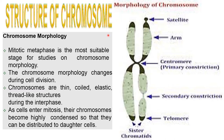Coming to the morphology, a chromosome consists of a satellite, two arms, and a central centromere which is a primary constriction. There is also a secondary constriction, and at the end there is a telomere. These two arms are called sister chromatids.